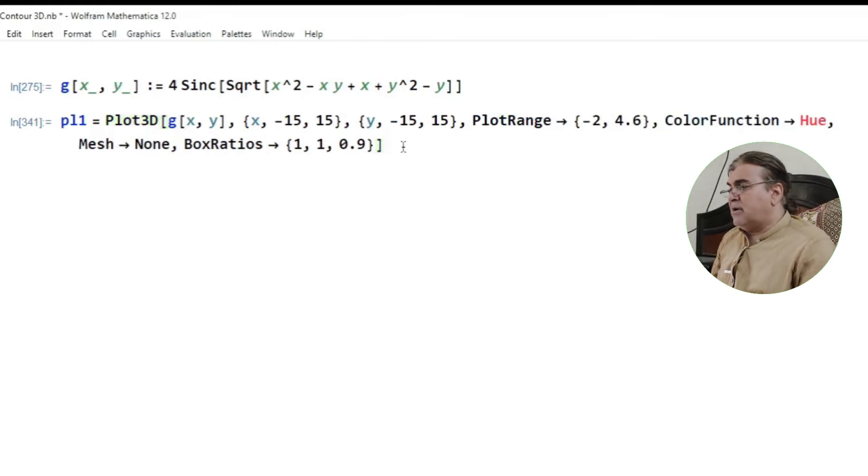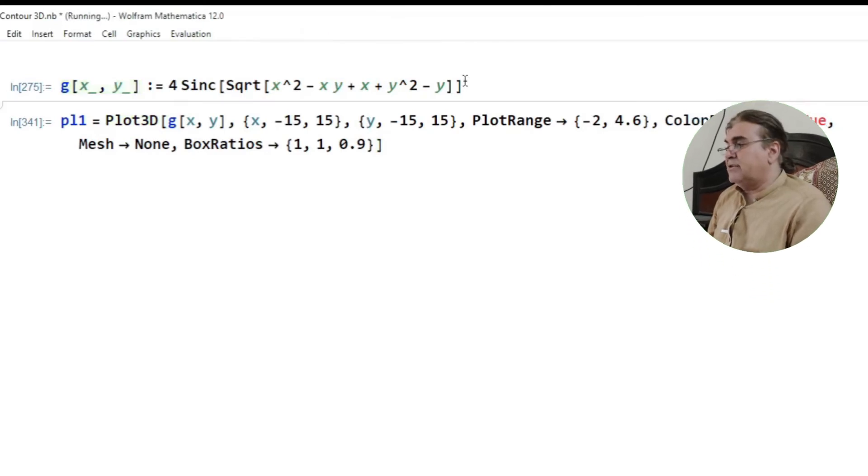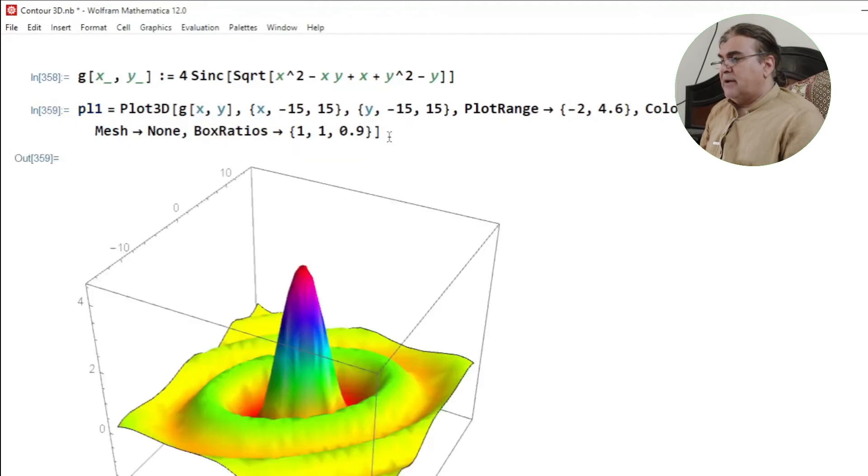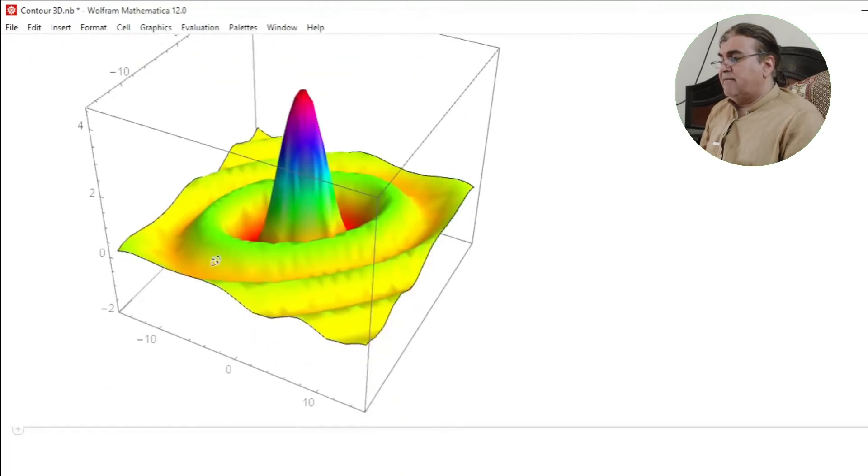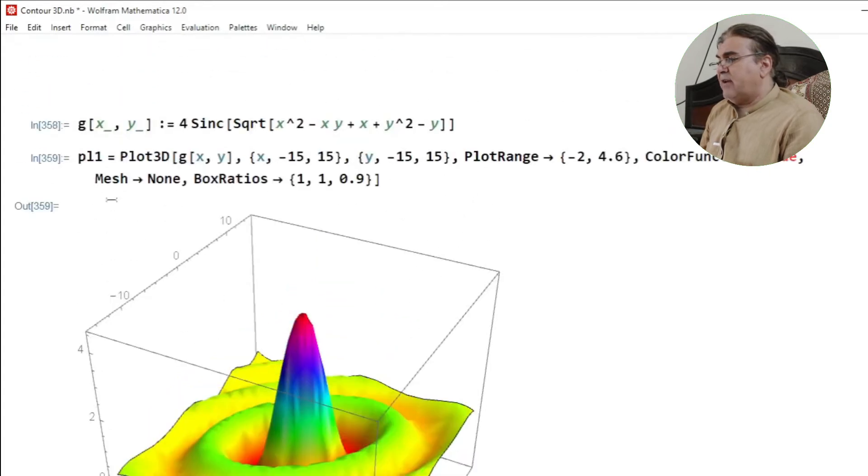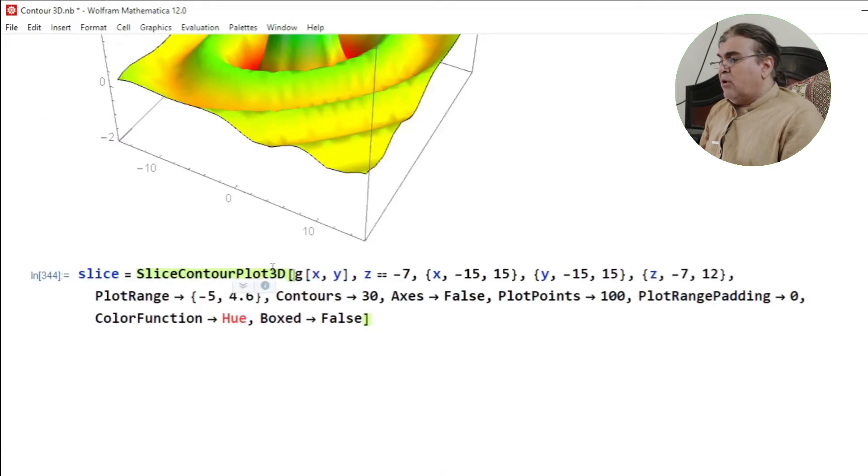And if I run this part of the program by first reading g and then I run this part, I get a 3D figure of the function and I assign this figure to pl1.